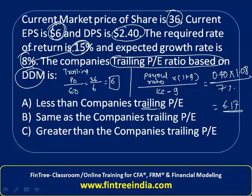That means the trailing P/E ratio based on DDM (6.17) is greater than the company's trailing price-to-earnings ratio (6), and therefore the answer is option C.